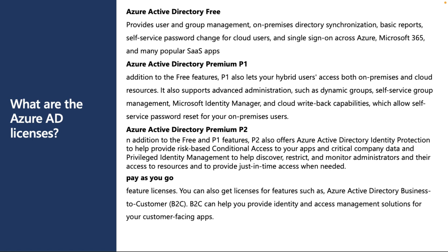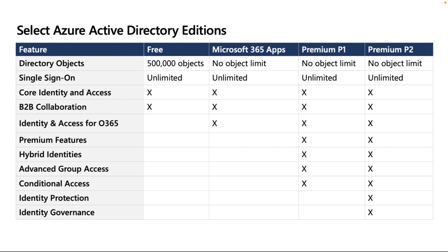Premium P1 also supports advanced administration such as dynamic groups, self-service group management, Microsoft Identity Manager, and cloud write-back — meaning password changes sync back to your on-premises Active Directory. Azure AD Premium P2 includes all Free and P1 features. Pay-as-you-go is also available. The edition comparison shows Microsoft 365 includes the Free tier automatically; Premium P1 and P2 require purchase and add conditional access, identity protection, and advanced features.